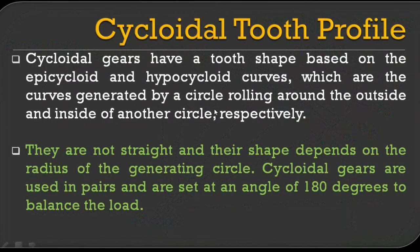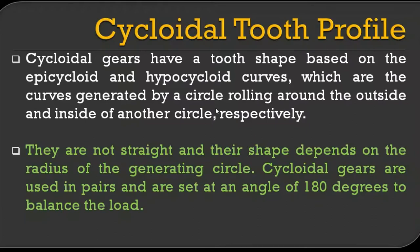The next topic is the cycloidal tooth profile. You might have practiced the representation of a simple cycloid when the circle rolls on a flat surface. When the circle rolls outside the circumference of another circle, you get an epicycloid. When the circle rolls inside the circumference of another circle, you get a hypocycloid. The cycloid gears have the tooth shape based on the epicycloid or hypocycloid curves.